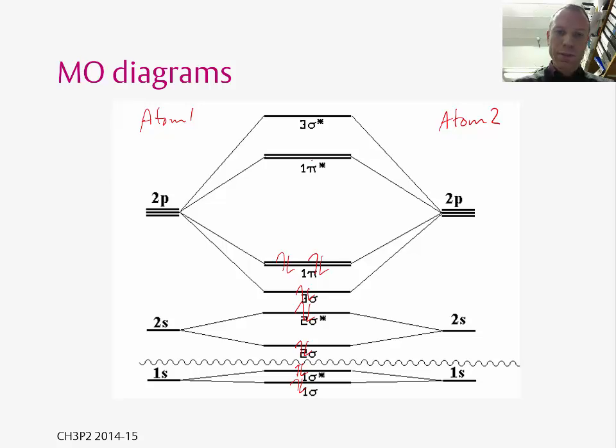For example, oxygen has 8 electrons per atom, so I've put the 16 electrons into these molecular orbitals, and you end up with these two parallel electrons in the pi star orbitals, which gives oxygen its paramagnetic character. So here we can see straight away that using LCAO theory gives us molecular orbitals which can start to explain things about the chemistry, and that's the key thing about LCAO theory and molecular orbitals.